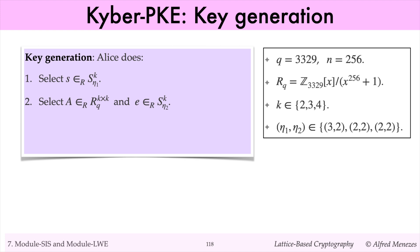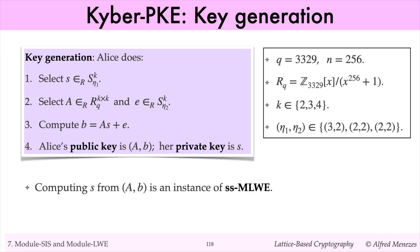In key generation, an entity Alice selects random small polynomial vectors S and E. The polynomials in S have size at most eta1, and the polynomials in E have size at most eta2. Also, Alice selects a random k-by-k matrix of polynomials. She computes B equals A times S plus E. Her public key is AB, whereas her private key is S. Note that computing the private key S from the public key AB is an instance of the short-secret version of module LWE. Also, determining any information about S from AB is an instance of the short-secret version of decisional module LWE.